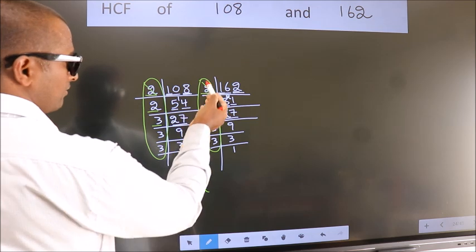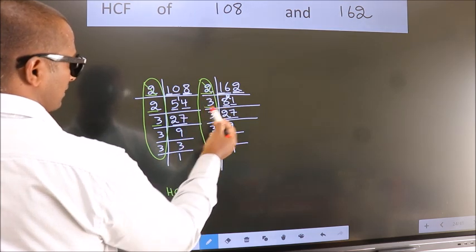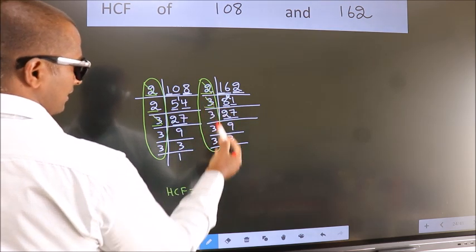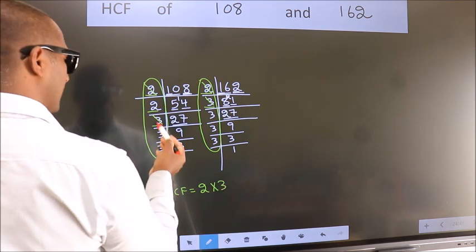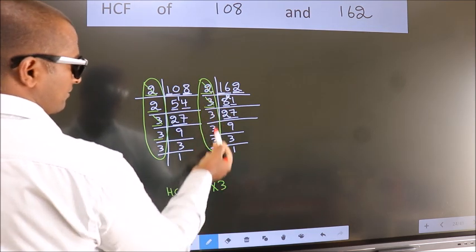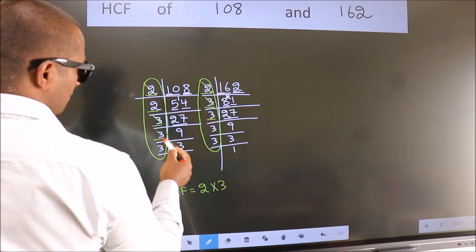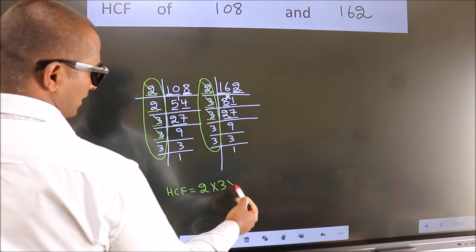Next number 3. Do we have 3 here? Yes. So cut 3 right here. Next number 3. Do we have 3 here? Yes. So cut 3 right here.